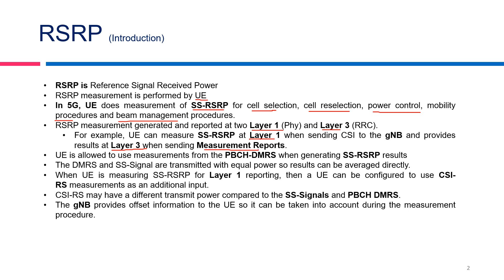These measurement reports can be used for mobility procedures like handover and beam management in 5G. In 5G, the UE is allowed to measure the PBCH-DMRS to generate the SS-RSRP results. The DMRS and SS signals are transmitted with equal power so that they can be averaged directly. When the UE is measuring SS-RSRP for layer 1 reporting, it can be configured to use CSI-RS.